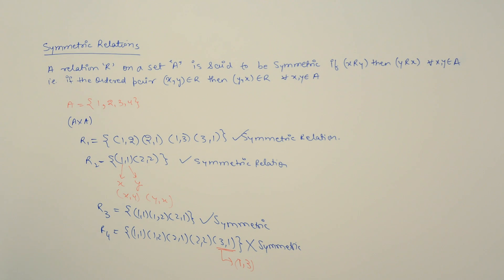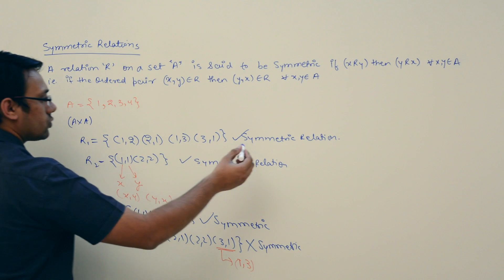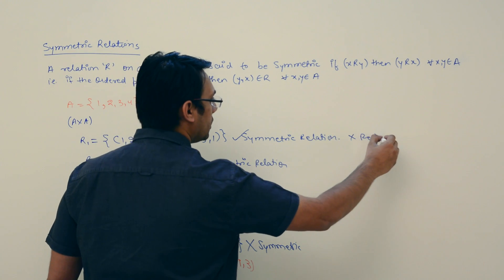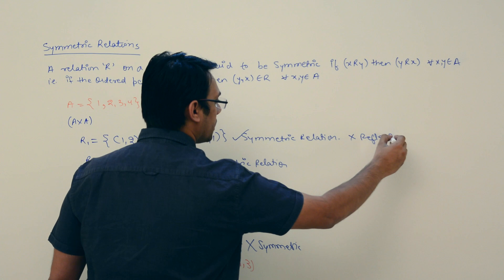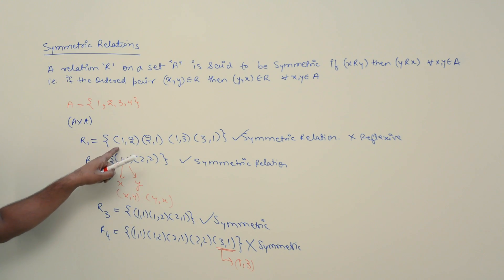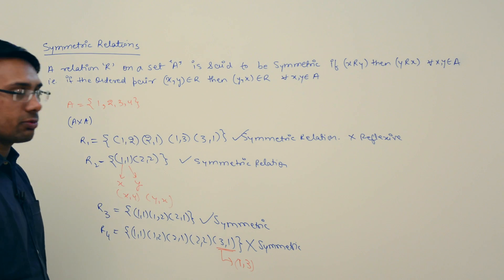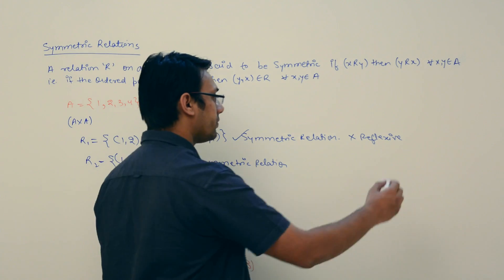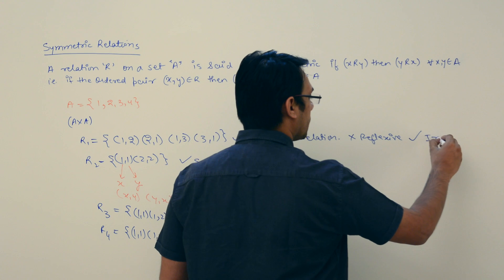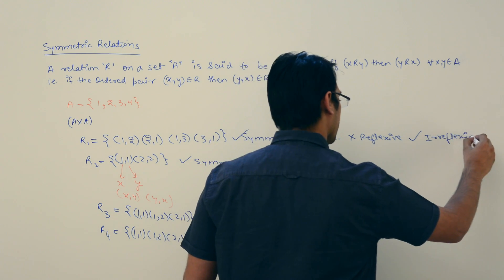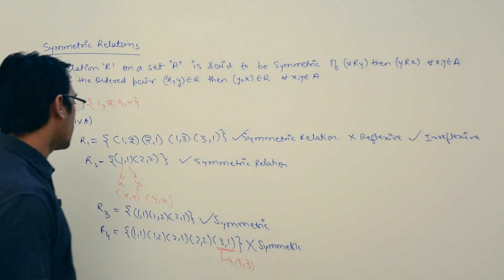Looking at these relations: the first relation R1 is symmetric but it is not reflexive, because it does not contain the pairs (1,1), (2,2), (3,3), (4,4). But the relation R1 is irreflexive. Relation R2 is not reflexive, but R2 is also not irreflexive because it contains the pair (2,2). So R2 is neither reflexive nor irreflexive.